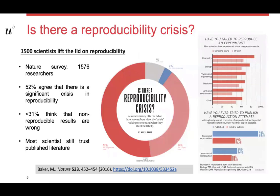So how big of a problem is reproducibility? Is there a reproducibility crisis? This question was asked in a Nature survey in 2016 of 2,500 scientists, and 52% agreed there is a significant crisis in reproducibility. However, less than a third think that non-reproducible results are wrong, which means that people rather think there are issues with standardization, documentation, and so on. Most scientists still trust published literature — obviously, you don't have any other choice, since you need the literature as a basis of your own work.